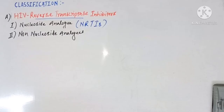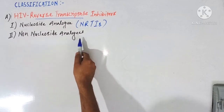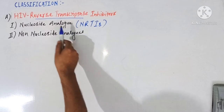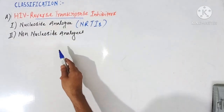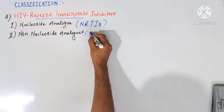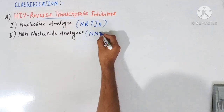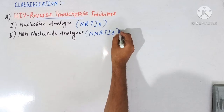Hello dear viewers, welcome back again. Today in this session we will discuss the structure of drugs which come under the class non-nucleoside analogues of HIV reverse transcriptase inhibitors. This class of drugs is also known by the name NNRTIs.